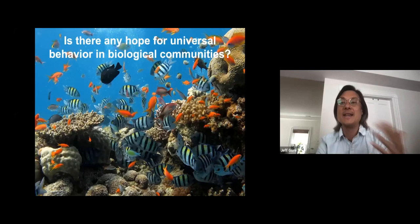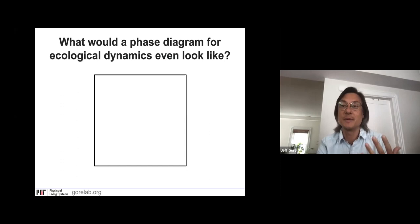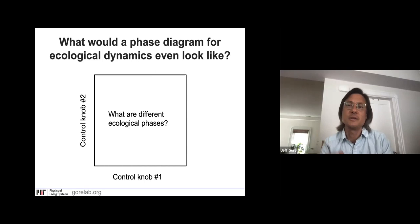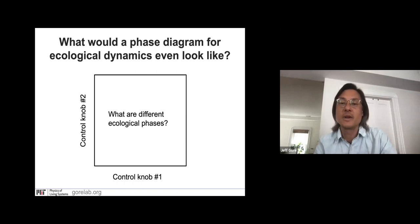Is there any hope of doing something like this in the context of multi-species communities? What I want to argue today is that there may be. But if we're going to do that, then we have to start thinking about what are going to be the control knobs that will allow us to switch between these different phases within a community. We also need to say what are the different ecological phases — in the context of water it was liquid, gas, solid; in the case of magnetic systems, it was whether it was a ferromagnet or a paramagnet. What do we mean in the context of a community? This is what I'm going to try to explain today.